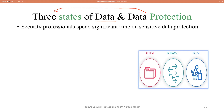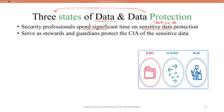Security professionals today spend a significant amount of time on sensitive data protection. Sensitive data means data that contains usernames and passwords, credit card numbers, or driving license information — whatever can be used for malicious purposes. To protect sensitive data, security professionals spend a lot of time and are normally called stewards, protectors, or guardians to protect the three things of the data.